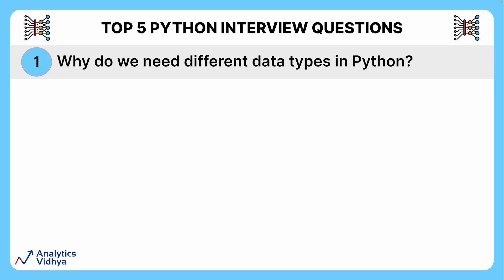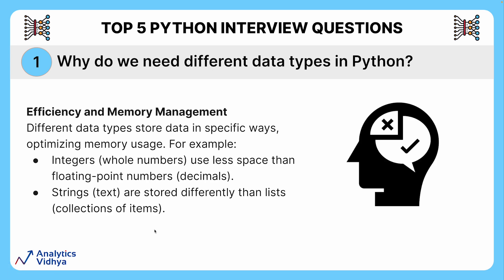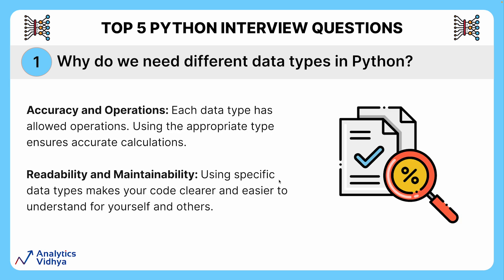Can't we just use one type for everything? Imagine you are packing for a trip — you wouldn't use the same suitcase for your clothes as you would for your fragile souvenirs. The same concept applies to data in Python. Different data types act like specialized suitcases for different kinds of information. First comes efficiency: if you have a variable to store someone's age, it would be a waste of space to use a complex data type when a simple integer is perfectly sufficient, helping Python use memory efficiently.